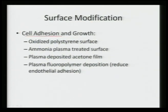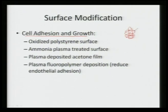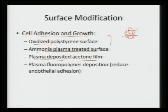In certain cases, when we require cell adhesion and growth — when the device is inserted into the body and we want it to become an integral part of a particular organ — cells should adhere on the surface and basically engulf the entire device for nice anchoring. Cell adhesion and growth can be encouraged by oxidized polystyrene surface, ammonia plasma treated surface, or plasma-deposited acetone film.